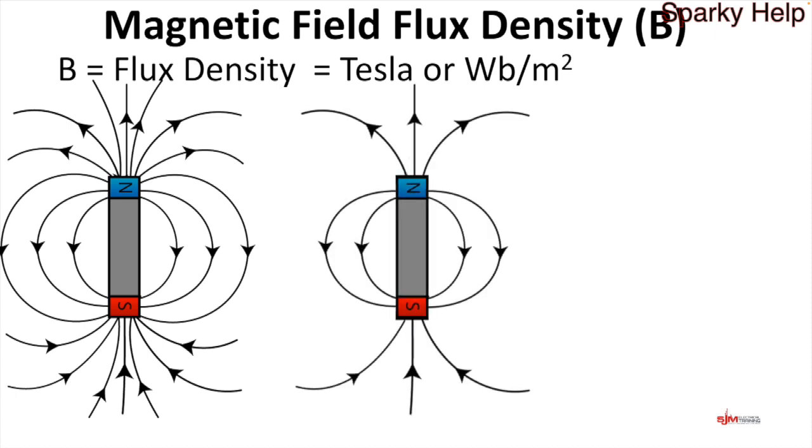Here's another magnet exactly the same size but there's fewer flux lines. Therefore the flux density, the number of flux lines per meter squared, would be higher on the one on the left hand side.